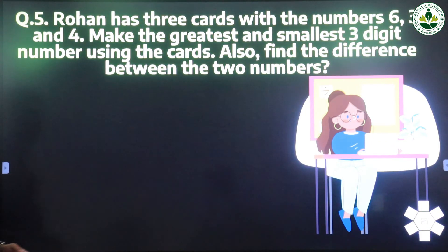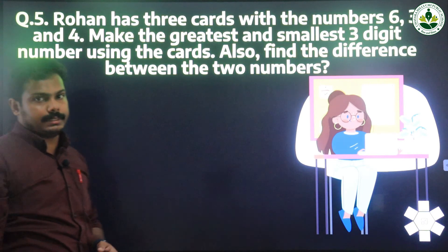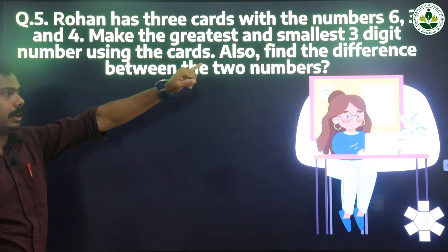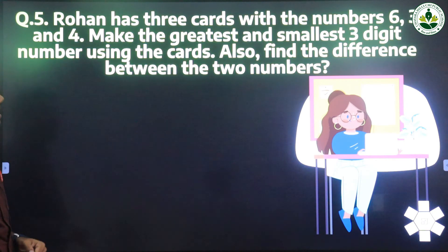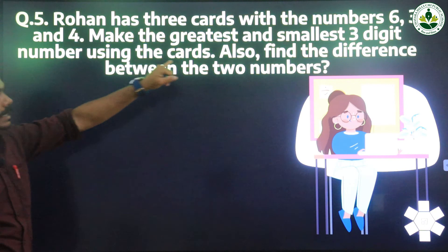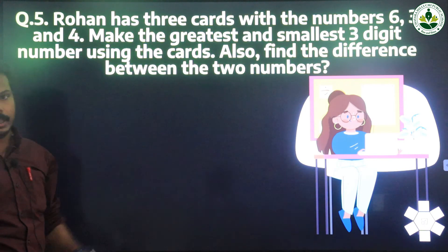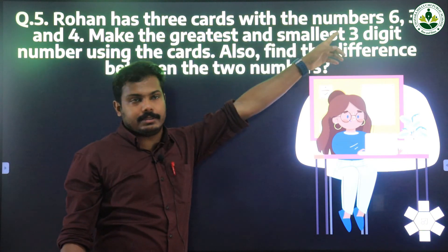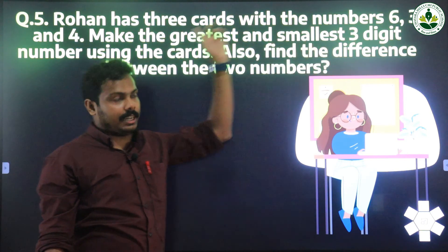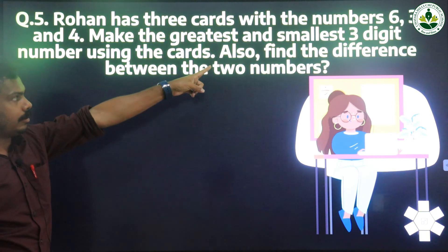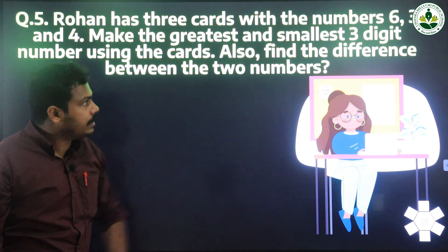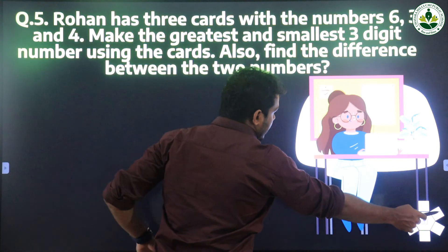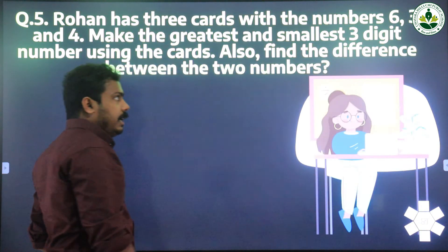Next question: Rohan has 3 cards with numbers 6, 3, and 4. We need to make the greatest and smallest 3-digit number using these cards, and also find the difference between the two numbers.